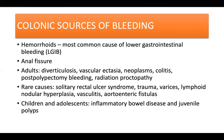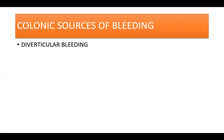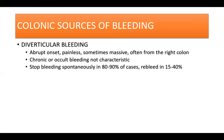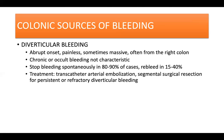In children and adolescents, the most common colonic causes of significant GI bleeding are inflammatory bowel disease and juvenile polyps. Diverticular bleeding is abrupt in onset, usually painless, sometimes massive, and often from the right colon. Chronic or occult GI bleeding is not characteristic of diverticular bleeding. It stops bleeding spontaneously in approximately 80% to 90% of patients and on long-term follow-up re-bleeds in about 15% to 40%. When diverticular bleeding is found at angiography, trans-catheter arterial embolization by superselective technique stops bleeding in a majority of patients. Segmental surgical resection is recommended for persistent or refractory diverticular bleeding.